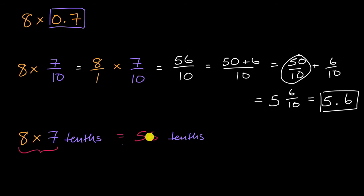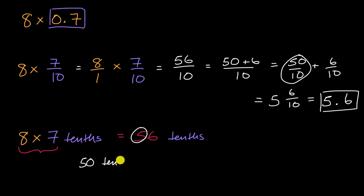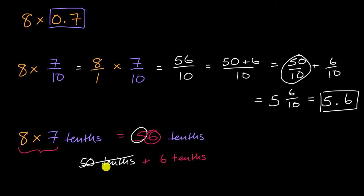56-tenths is the same thing as 50-tenths plus six-tenths. And 50-tenths is the same thing as five ones. So we have five ones and six-tenths, which is exactly 5.6.